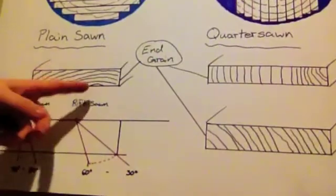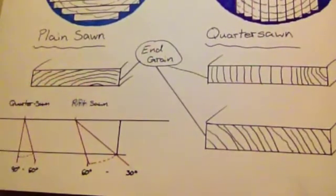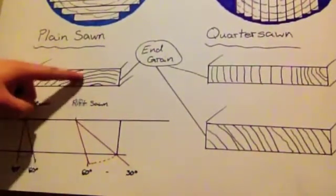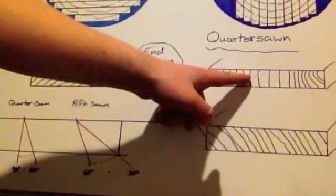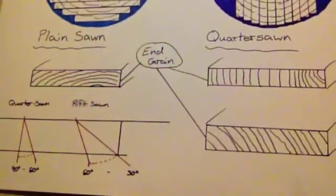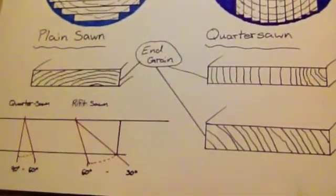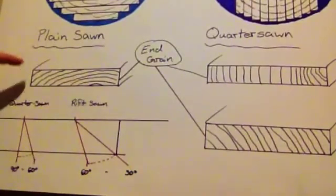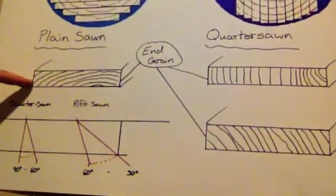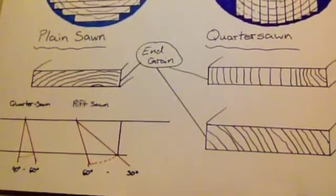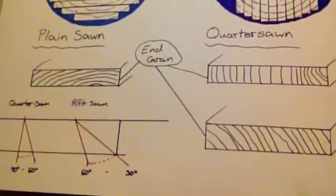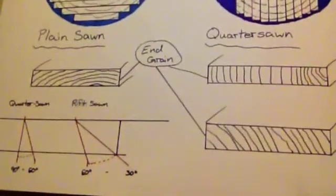Now as we take a closer look at the annual rings present on the end grains of both plain sawn and quarter sawn wood, you can see there is quite a big difference. Because the plain sawn board is cut with annual rings arching horizontally, this makes the board more prone to cupping due to the fact that wood will always cup opposite the annual rings. This process also promotes expansion and contraction of the wood.